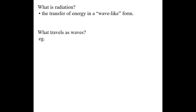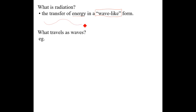So what is electromagnetic radiation? Well, it is a form of energy — the transfer of energy in the form of a wave. If I just kind of draw a wave, this is essentially what we're talking about with electromagnetic radiation.